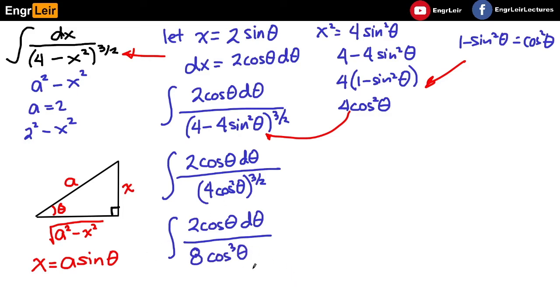And cancelling the factors, then, ilabas natin yung 2 over 8 as 1 fourth. We get 1 fourth, the integral of d theta over cosine squared theta or 1 fourth, the integral of secant squared theta d theta. Which is, of course, secant squared theta. Anong integral yan? Ang integral yan ay tangent theta.